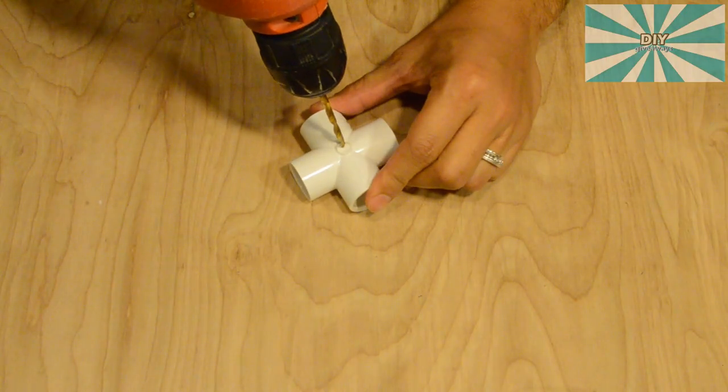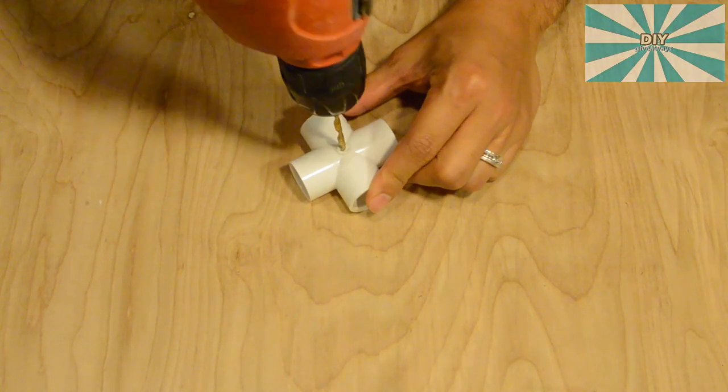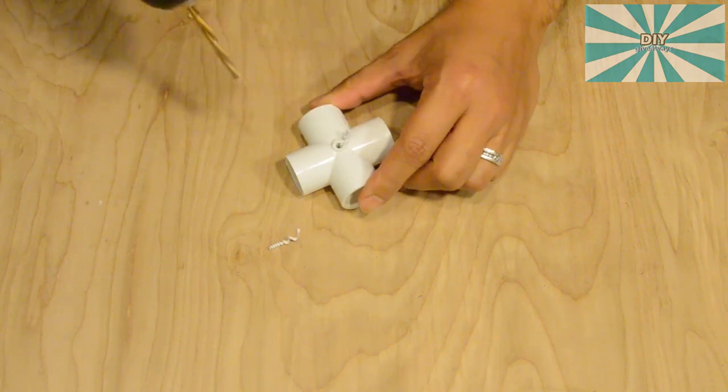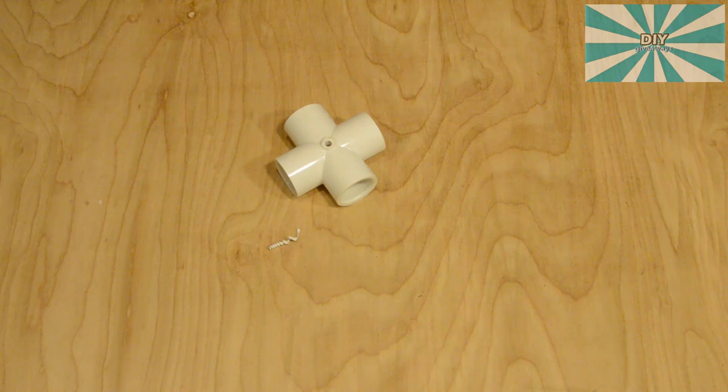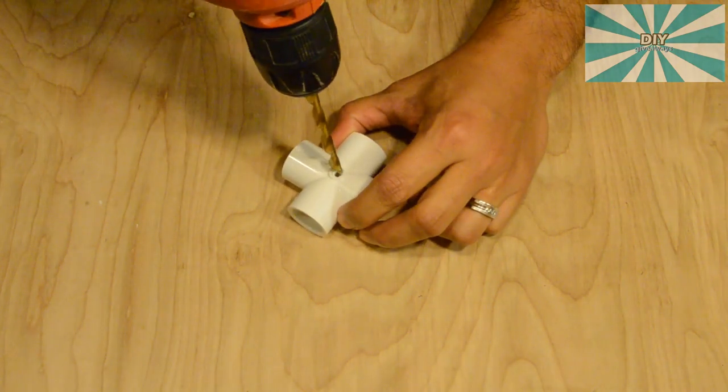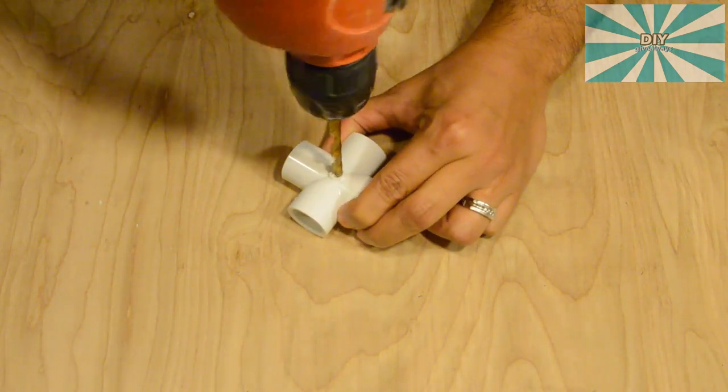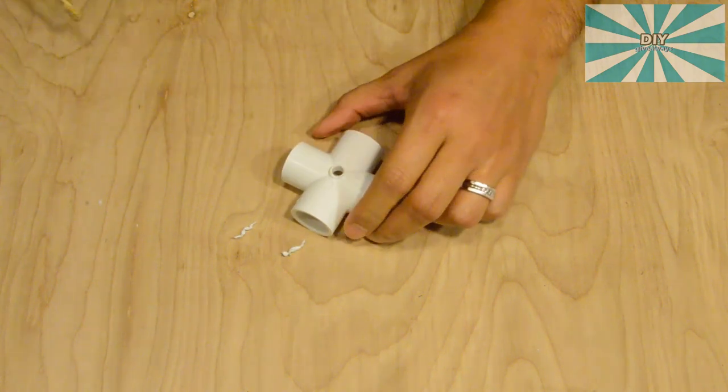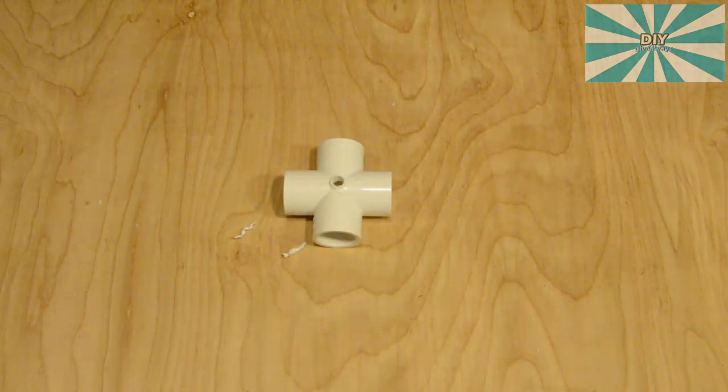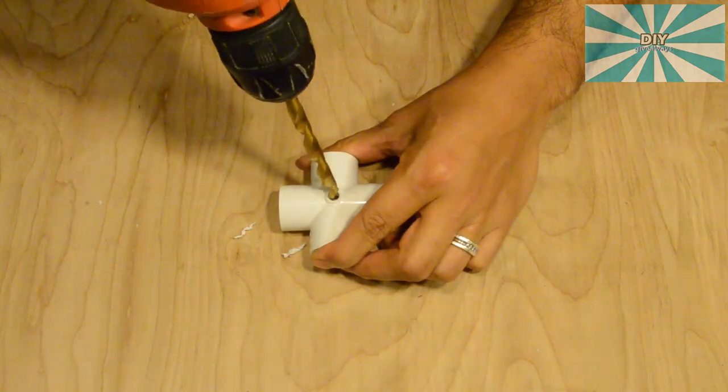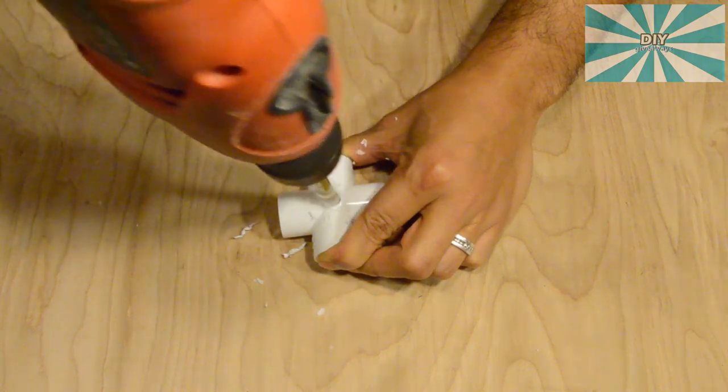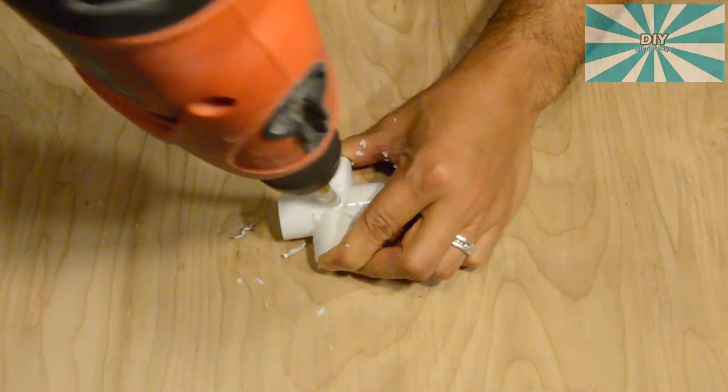We'll start by drilling a pilot hole on one side with a 7/32 drill bit. Make the hole bigger using a quarter inch drill bit. And finally use a 5/16 drill bit. You may need to work the drill bit around the hole to make it bigger so the screw head fits.